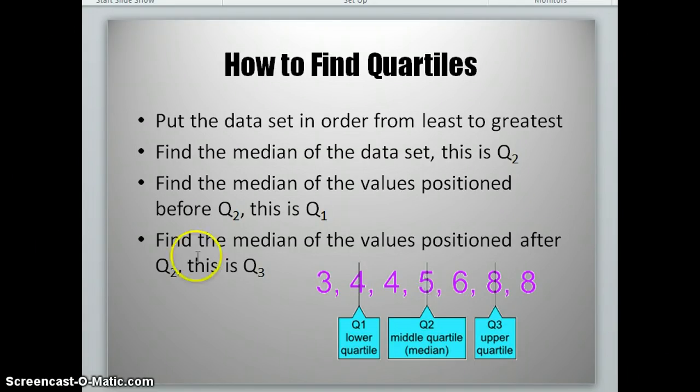Next, we're going to find Q1, or your first quartile. To do that, you're going to look at the data values that are positioned before Q2. In this case, we have the values 3, 4, and 4. We're going to find the median of these three values, in this case, which is the number 4. And this is our Q1, our first quartile.